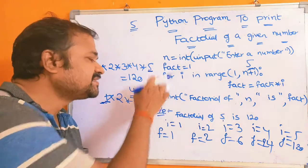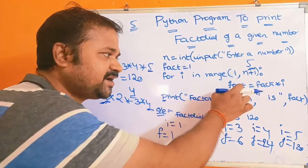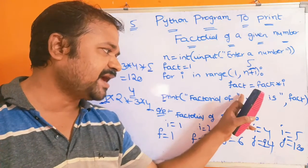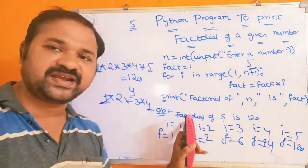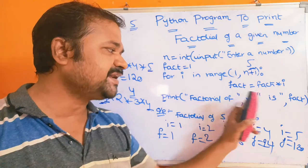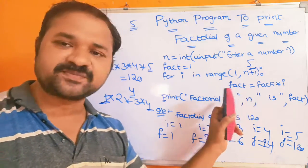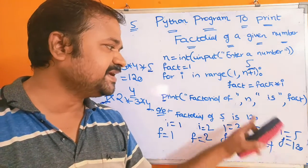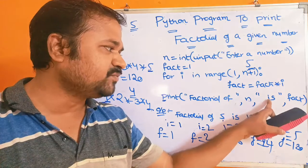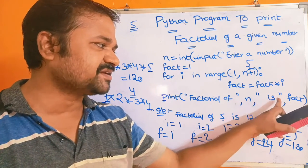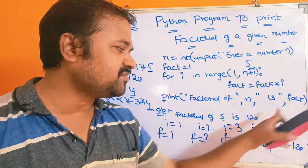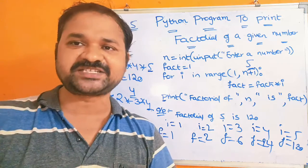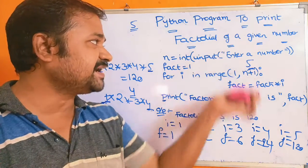The print statement is written at the first column because it is not part of the for loop body. print("factorial of ", n, " is ", fact): the string "factorial of" will be printed, followed by n (which is 5), then "is", then fact (which is 120). Note: if you place n and fact inside double quotations, then the literal text 'n' and 'fact' will print instead of their values.